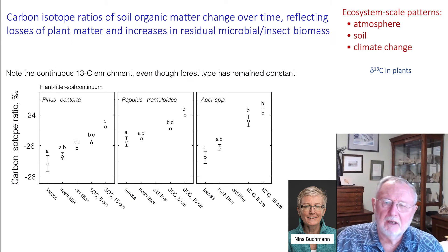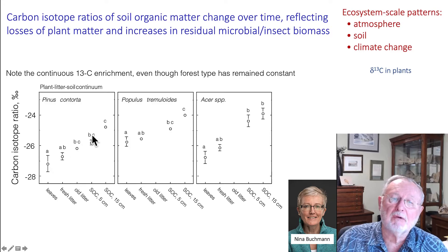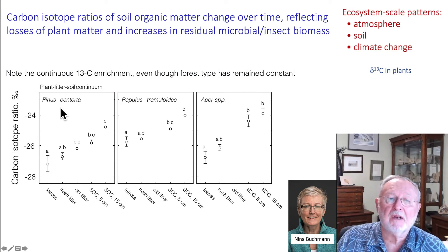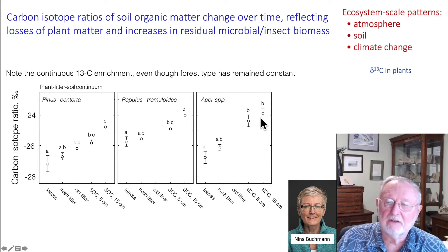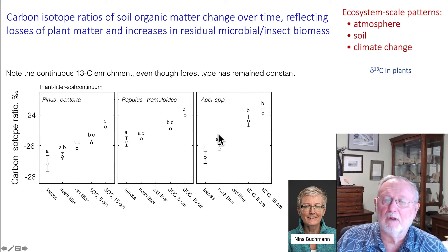Now turning to soils, Nina Buchmann showed that if you began to sample the isotope ratio of leaves, fresh litter, old litter, organic matter in the surface layers and in deeper layers, there was a progressive increase in carbon isotope ratio. That progressive increase was seen in Pinus contorta stands, in Populus tremuloides stands, and in Acer stands. In each case, as the soil got older and older, the carbon isotope ratio of organic matter increased — going from relatively depleted in ¹³C to relatively enriched.